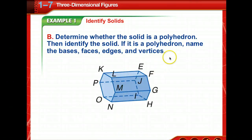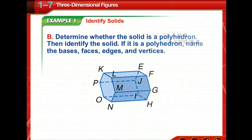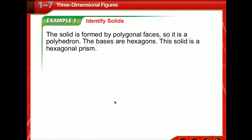Now we're to determine whether this solid is a polyhedron, then identify the solid. If it is a polyhedron, name the bases, faces, edges, and vertices. This solid is formed by polygonal faces, so it is a polyhedron. The bases are hexagons. Sure enough, so it is a hexagonal prism. Say that three times real fast. I can't.